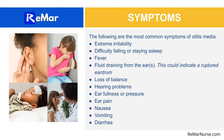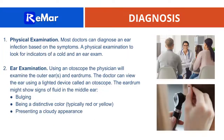How is otitis media diagnosed? The doctor will diagnose the ear infection based on the symptoms from a physical exam, looking for signs of a cold or upper respiratory tract infection. Using an otoscope — a lighted device — the physician will examine the outer ear and eardrum. The eardrum might show signs of fluid in the middle ear, such as bulging.